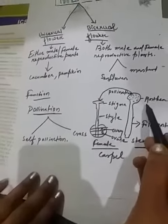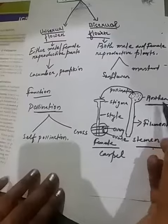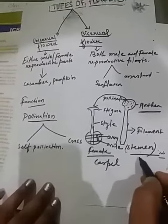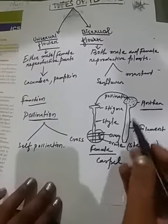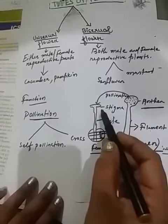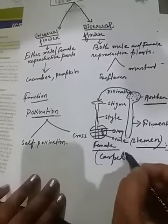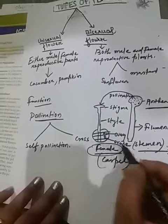The pollen grains are present inside the anther. The anther and filament are both present in the stamen, the male reproductive part. The pollen grains from anther will come to stigma. The stigma, style, and ovary are present in the carpel, the female reproductive part.